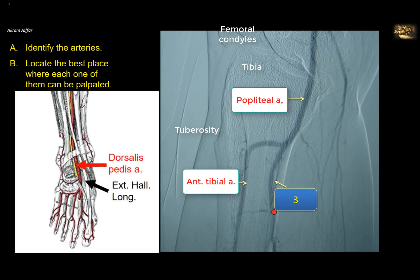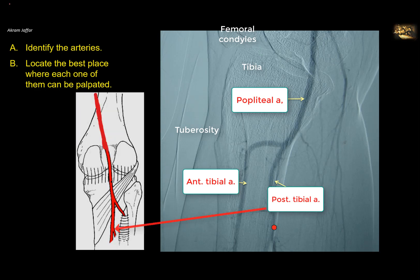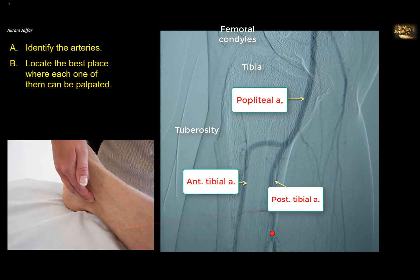The third artery is the posterior tibial artery, which is the continuity of the popliteal artery. It passes deep to the arch and origin of the soleus muscle, and this artery can be palpated posterior to the medial malleolus at the ankle, before it splits into medial and lateral plantar arteries that supply the sole of the foot. So the posterior tibial artery can be palpated behind the medial malleolus.